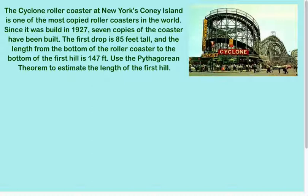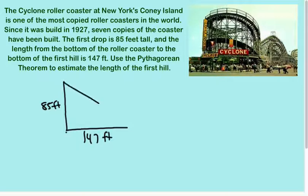So the first drop is 85 feet tall. And the length from the bottom of the roller coaster to the bottom of the first hill is 147 feet. So from the bottom of the roller coaster to the bottom of the first hill is going to be 147 feet. So there is my Pythagorean Theorem. The length of the first hill, the length of this drop-off is what we're trying to find. So Pythagorean Theorem says that if I've got a right triangle, like this is 90 degrees, that makes it right.